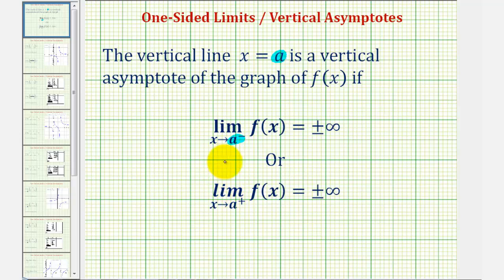Or if the limit as x approaches a from the right of f of x is equal to plus or minus infinity. So if either of these two limits equals plus or minus infinity, then x equals a is a vertical asymptote.